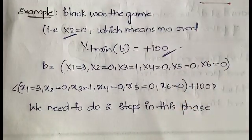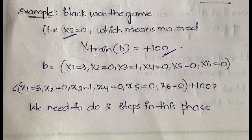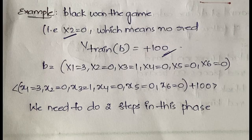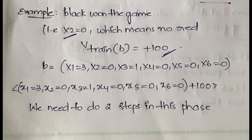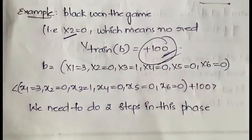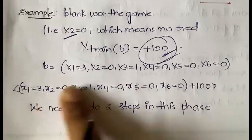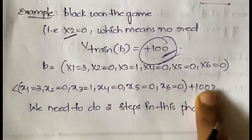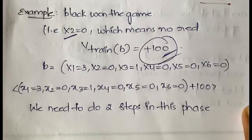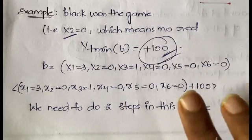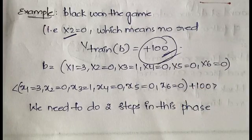Since black won, v_train(b) equals plus 100. To understand this, you must have understood step two where we defined a target function: if you won it is +100, if you lost it is -100, and if it was a draw it is 0. So since black won the game, v_train(b) is +100. That is how you represent the training example.